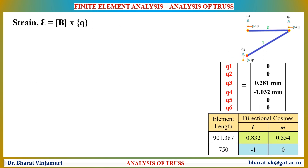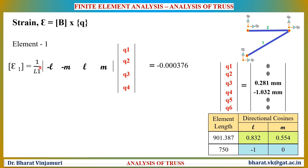Let us now determine the strain for each individual element. To find the strain, we use the equation B × Q, where B is the strain displacement matrix and Q is the displacement vector for each element. For element 1, the strain displacement matrix is (1/L₁) × [−l, −m, l, m], with directional cosines 0.832 and 0.554, and displacement vectors Q1, Q2, Q3, Q4 equal to 0, 0, 0.281 mm, and −1.032 mm. Multiplying these values gives the strain for element 1.